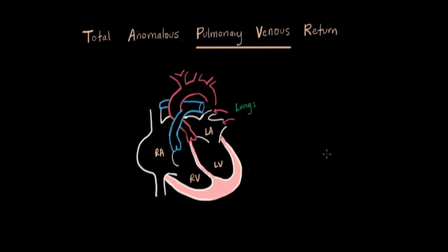The thing with TAPVR is instead of it being plugged over here where it's supposed to be, our pulmonary veins are plugged over here into the right ventricle. I'm going to draw two here coming from the left and right lungs.